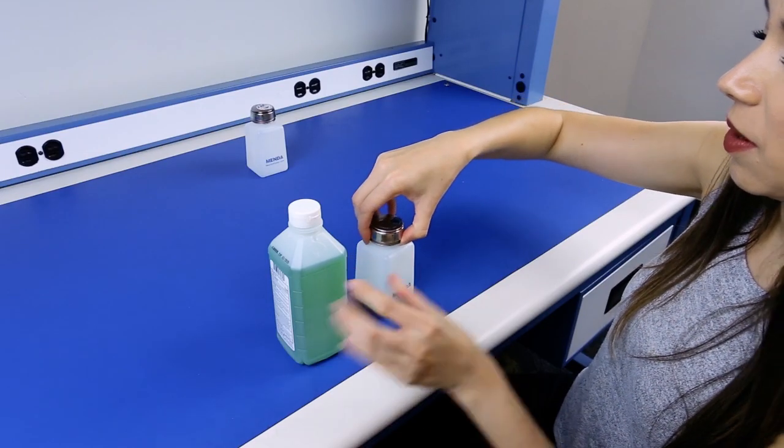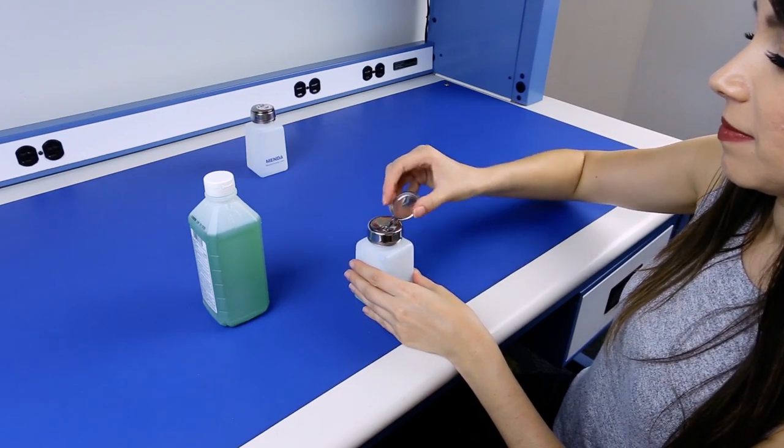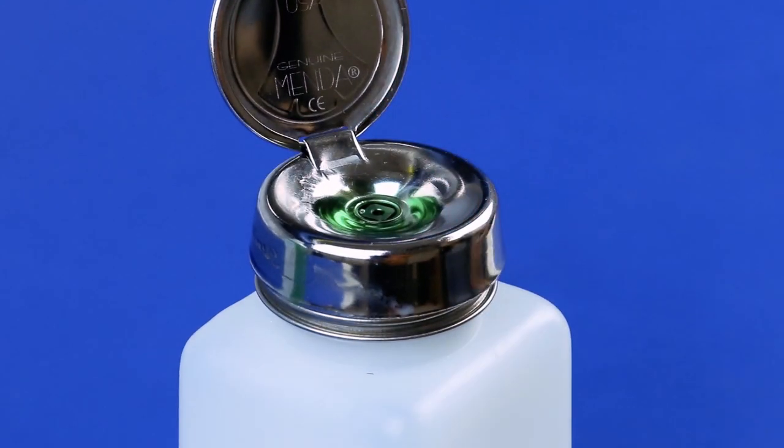A tip for first use of the one-touch and pure touch pump is priming the pump. Once your bottle has been filled with the desired liquid, press the pump multiple times until liquid is dispersed into the reservoir and you'll be ready to go.